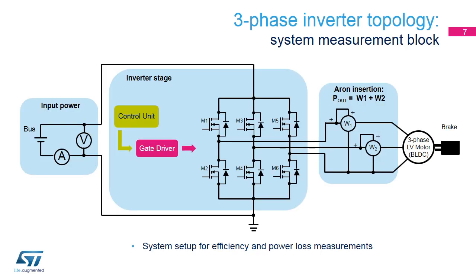The figure shows a classic schematic diagram of a three-phase inverter of a brushless DC (BLDC) motor, as well as the measurement equipment used to evaluate the system's efficiency. The input and output power can be calculated using two different insertions: a volt-amperometric insertion for the input power and an Aron insertion for the output power, useful in balanced system loads. The efficiency will be the ratio between the two measured power values.